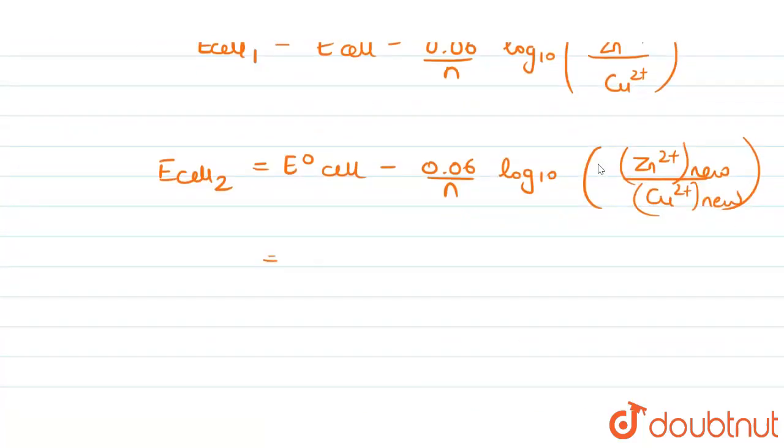So the new concentration is equal to E naught cell minus 0.06 upon N. N over here is equal to 2 into log to the base 10. We have 2 Zn2+ upon 2 into Cu2+. 2 and 2 gets cancelled.